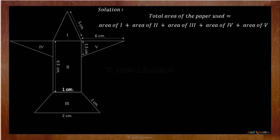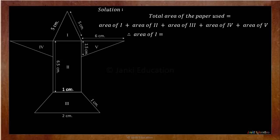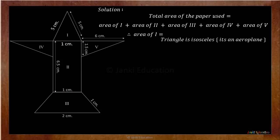Let's start to find area of 1, that is this triangle. You can see here it is an aeroplane, so definitely this side is also going to be same as the other one. Therefore its measurement is also 5 cm. As well, you can see that these two sides are equal because it is clearly seen that it is a rectangle. Therefore the measurement of the third side of the triangle is also going to be 1 cm. Since both sides are the same, we can say that it is an isosceles triangle.